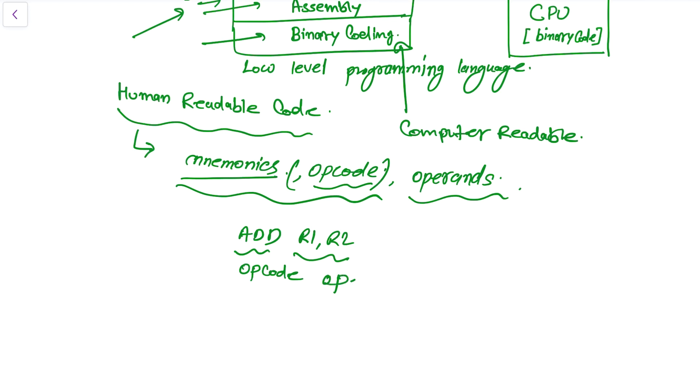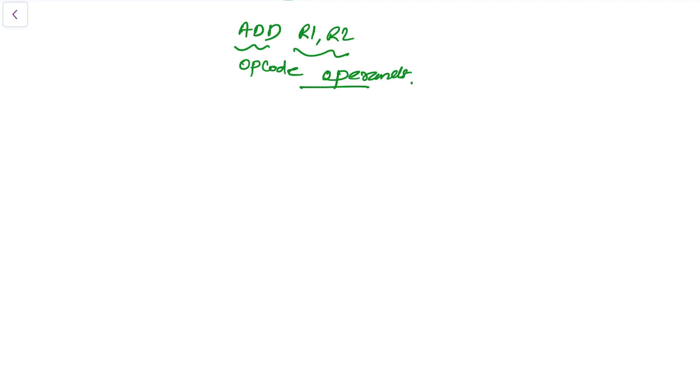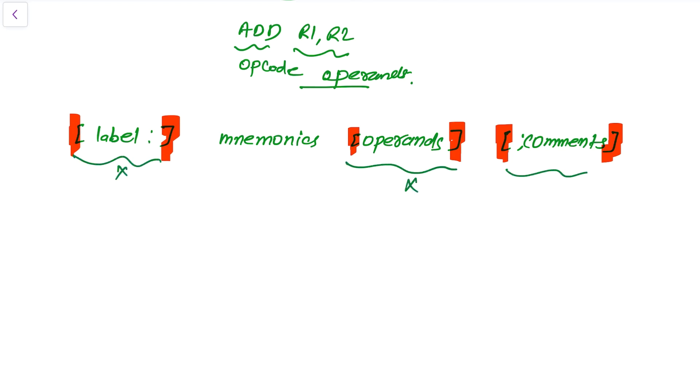The general structure of assembly language is like this: it has a label and then semicolon, and then it has mnemonics, and then finally it has operands, and then finally it has comments. One thing you might notice here is that this bracket represents optional. That means any line of code can be without label, can be without operands, and can be without comments.